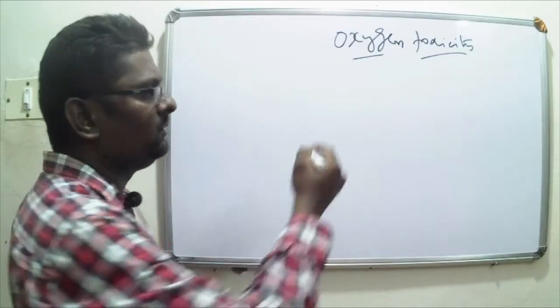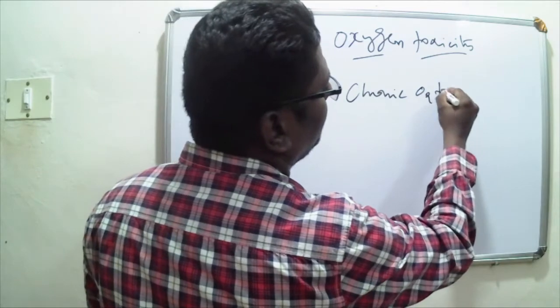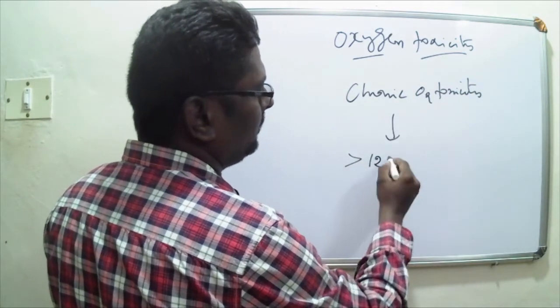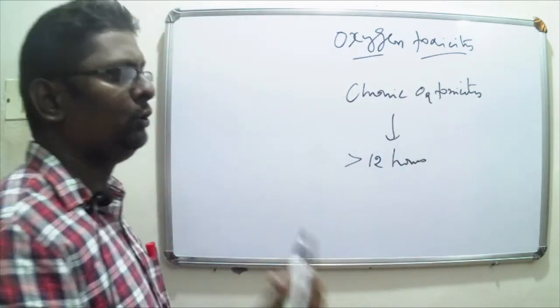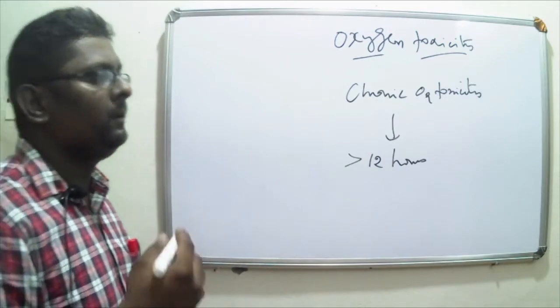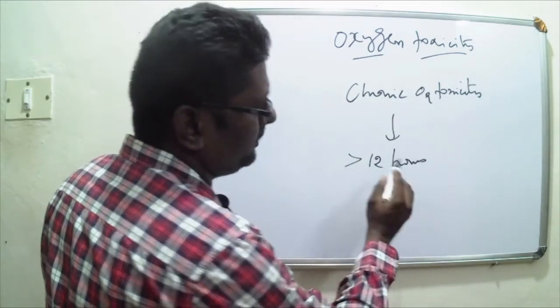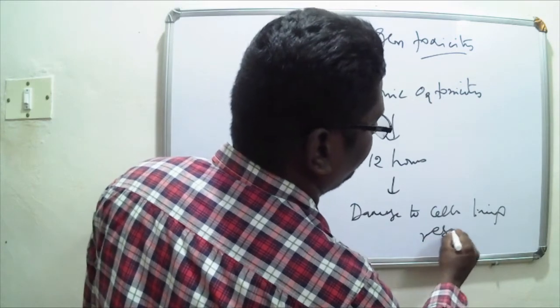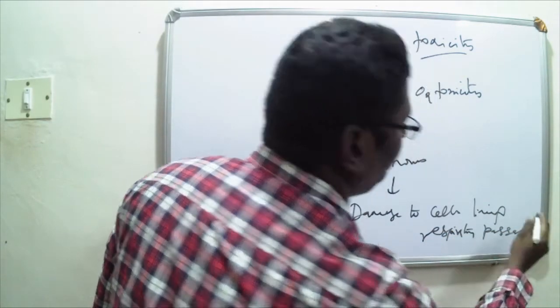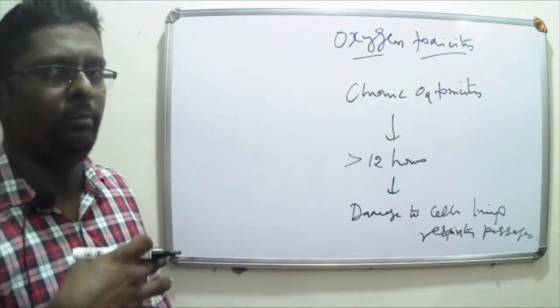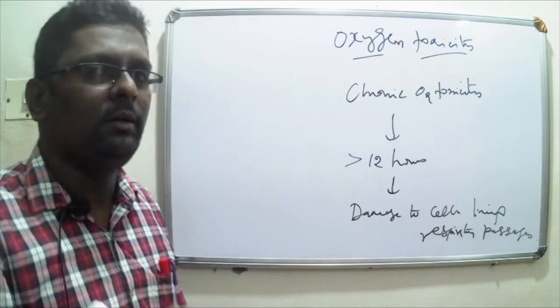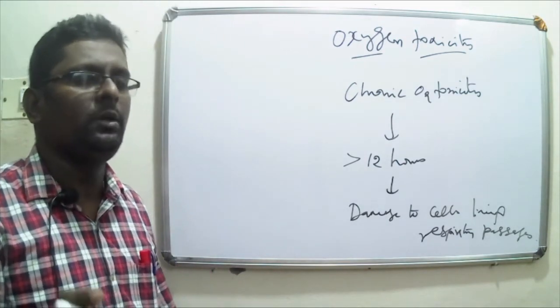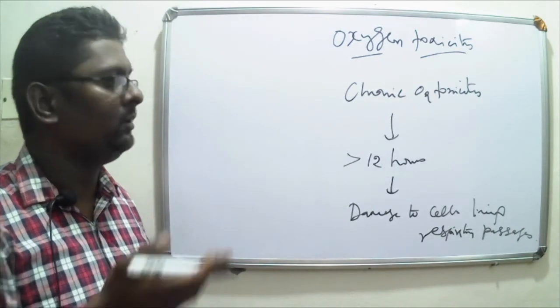Chronic oxygen toxicity happens when we deliver oxygen even at normal partial pressures but for a longer duration of time. It usually happens when we deliver oxygen continuously for more than 12 hours. The reason here for the symptoms to develop is due to damage to the cells lining respiratory passages. It would lead to nasal congestion, sore throat, pulmonary congestion, and atelectasis. Cells of the lungs are more affected because they are directly exposed to the oxygen, and as a result, damage to the cells lining the lungs happens.